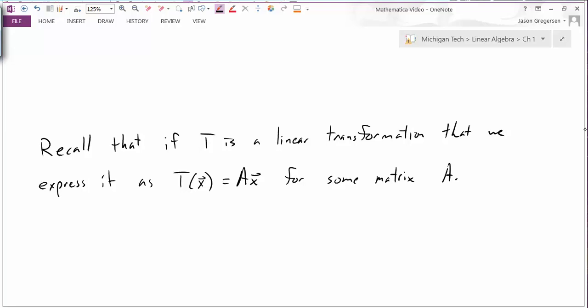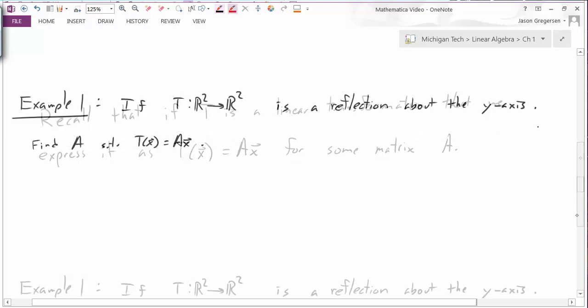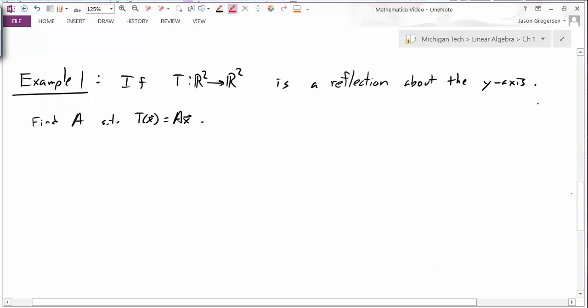So first, recall that if T is a linear transformation, we can express it in terms of matrix multiplication for some matrix A. Now, as a specific example, let's look at this next problem. If T is the transformation from R2 to R2, so we're working within the plane, and this transformation is a reflection about the y-axis, find the matrix A that represents the transformation.